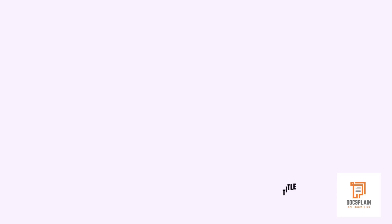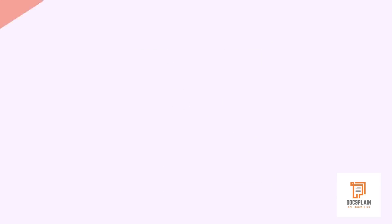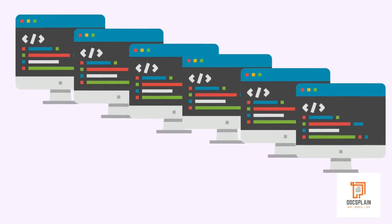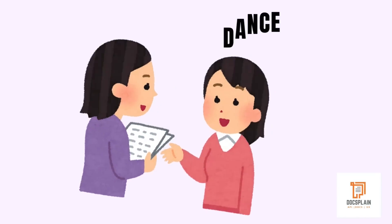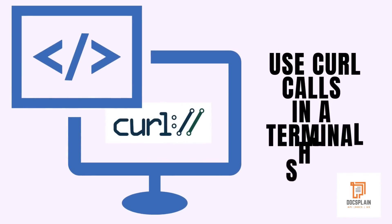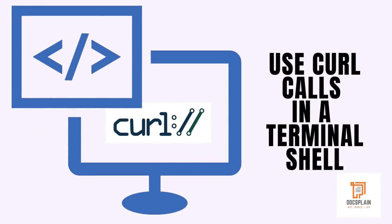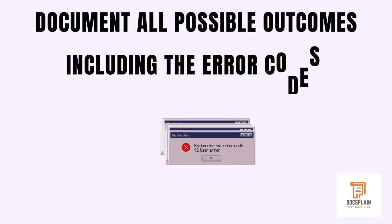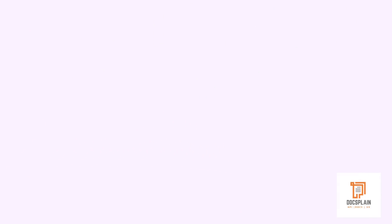To expand on its details, you need to work on the second key element: code samples. You need to create code samples for each HTTP method and guide the developer on what's the best way to use them. The most common way is to include a curl sample request and showcase its response, including all possible response codes and the HTTP error codes.